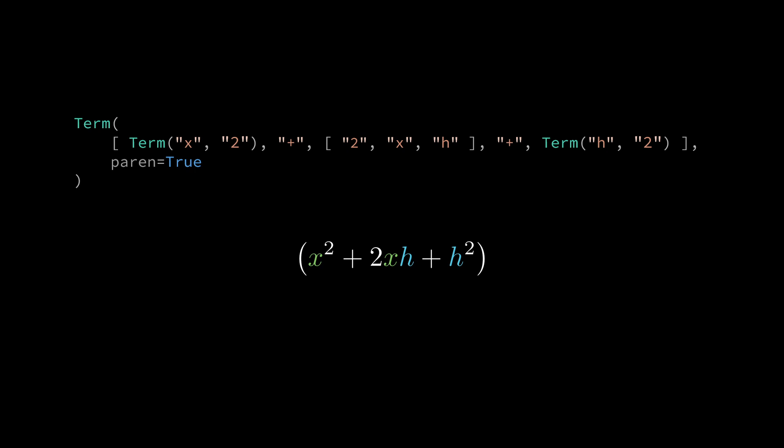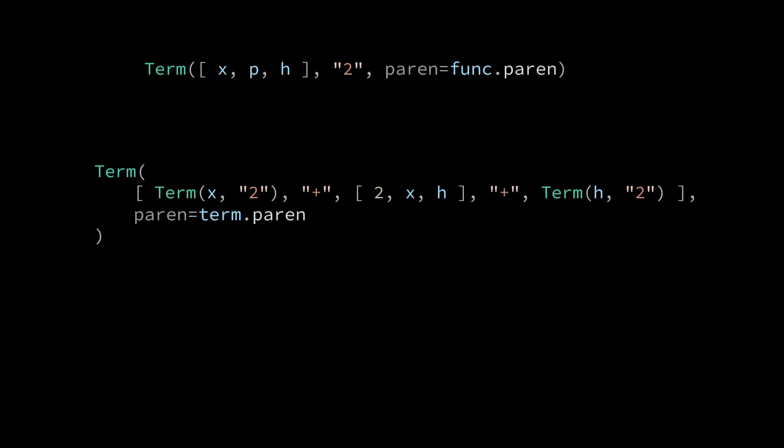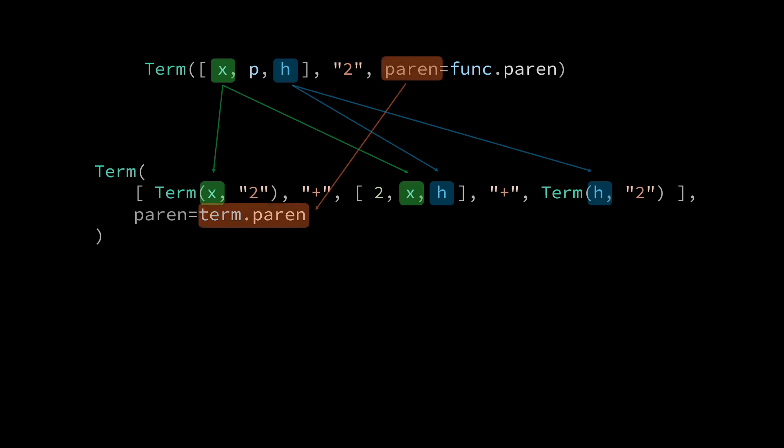To create the correspondence required for automatic animation we will now reuse variables from the previous term component. First we pass in the x into the x squared and 2xh sites. Then we pass in the h into the 2xh and h squared sites. Reactive manim will interpret this as an instruction to broadcast these variables.